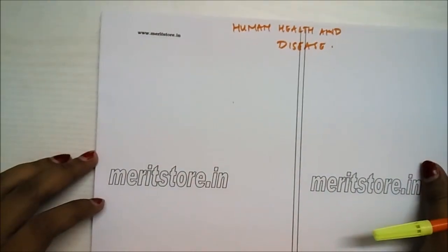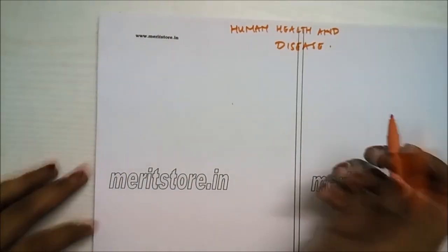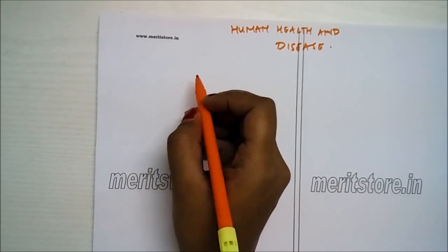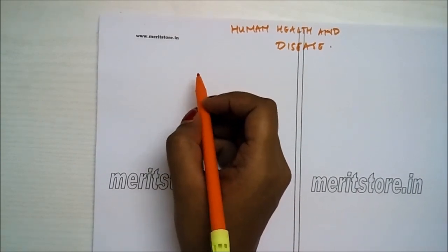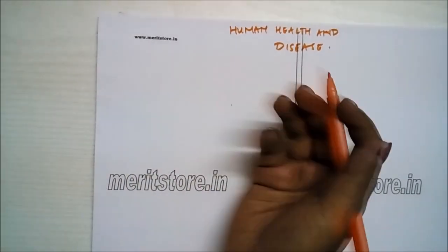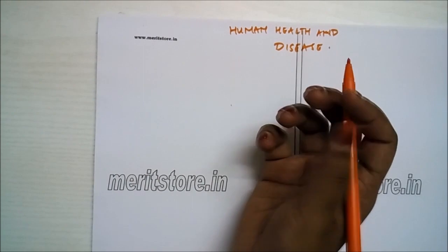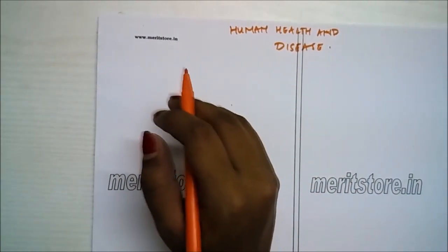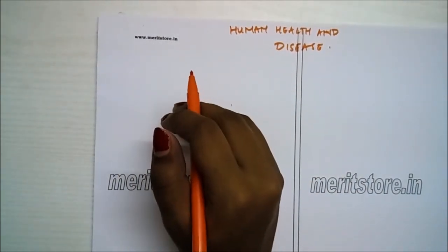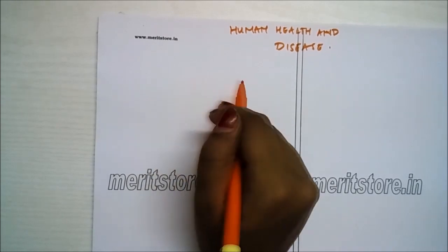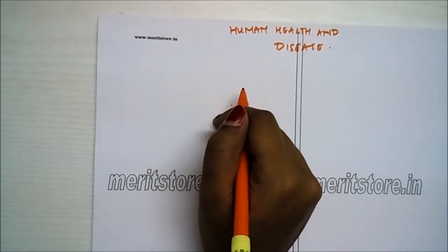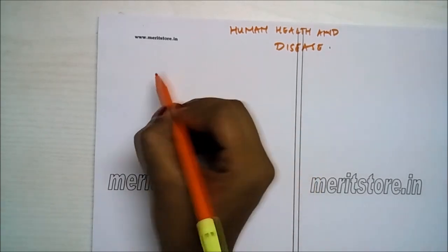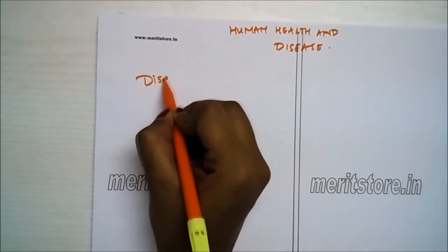Chapter: Human Health and Disease. Good health is a state of optimum physical fitness, mental maturity and alertness with freedom from anxiety and social well-being with freedom from social tensions. When the functioning of one or more organs or systems of the body is adversely affected, characterized by various signs and symptoms, we say that we have disease.